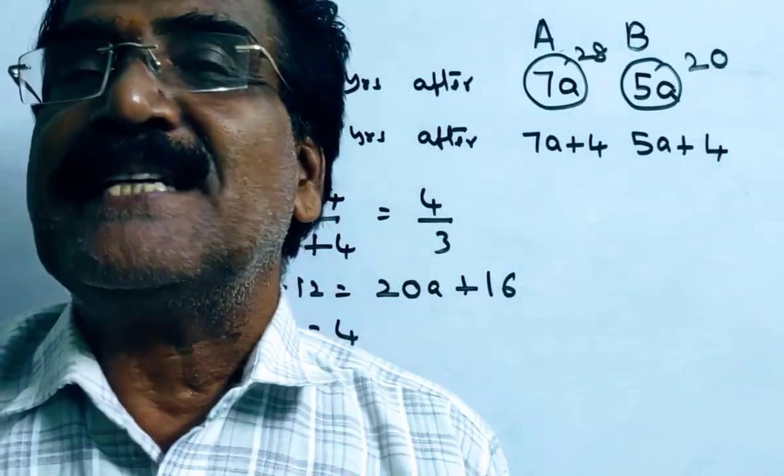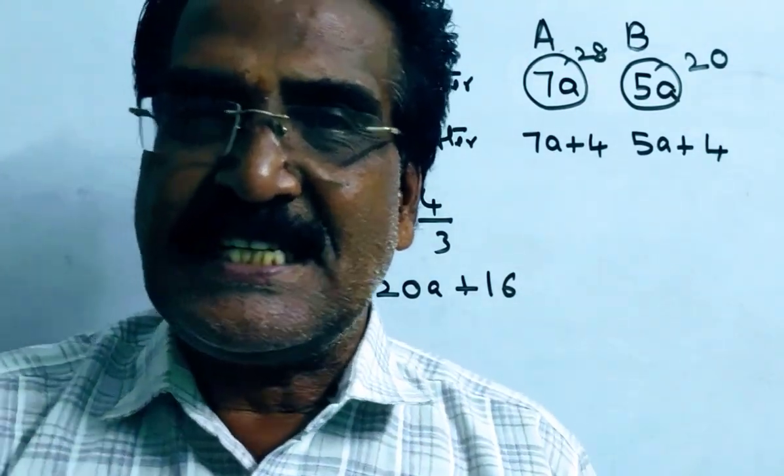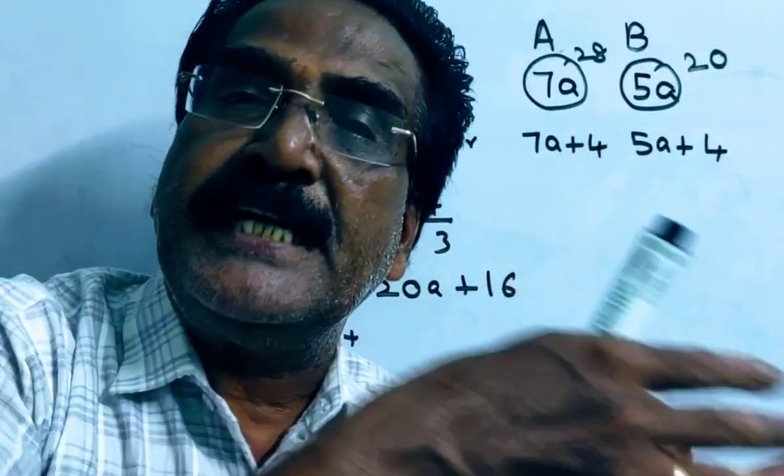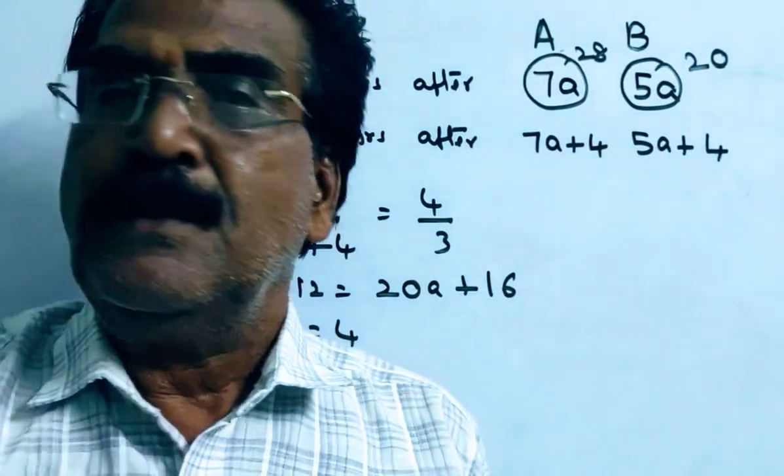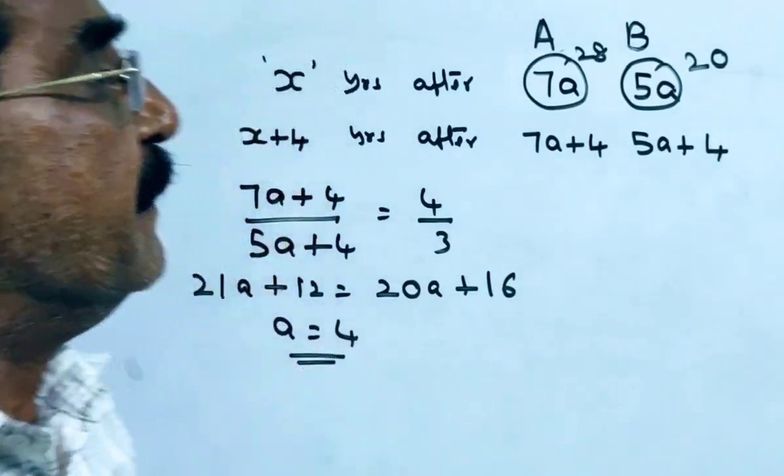It is given that A's present age is 26 years. So after X years he becomes 28, which means X equals 2. Present age is 26, and after 2 years he will be 28.